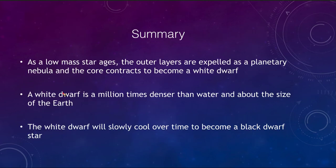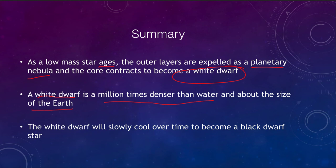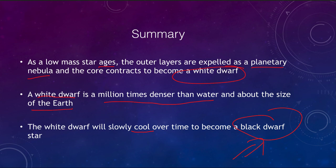To summarize what we looked at: for a low mass star as it ages, the outer layers are expelled as a planetary nebula and the core contracts to become a white dwarf. The white dwarf is a million times denser than water and about the size of the Earth, with electrons compressed as close together as possible. The white dwarf slowly cools over time to eventually become a black dwarf — the ultimate fate of essentially all stars under 10 solar masses. Those stars over 10 solar masses have more interesting things in store, which we will look at later. That concludes this lecture on the deaths of low mass stars.